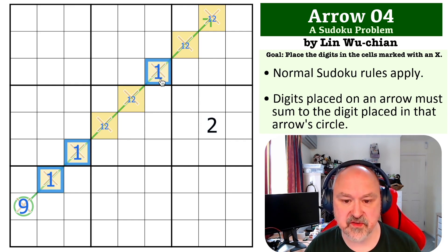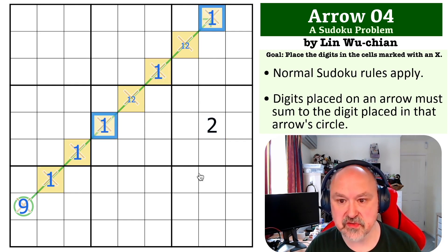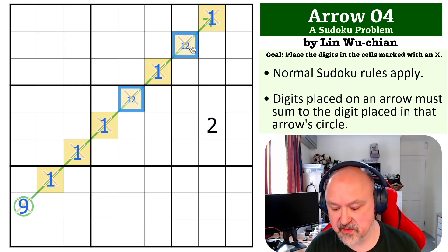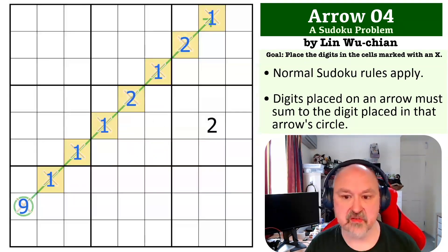So all of those have to become 1. But this 2 means that those can't be 2, so those have to be the 1s, these have to be the 2, and that is the solution to the problem.